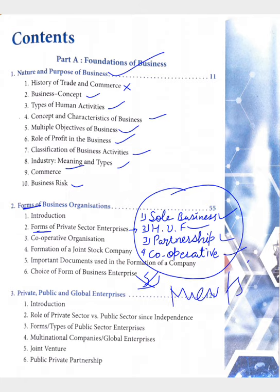The third unit is Private, Public and Global Enterprises. In the second unit we discussed about forms of private, and in the third unit we discussed about forms of public.